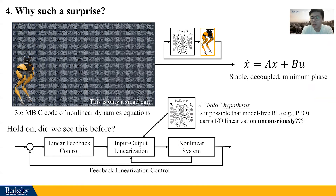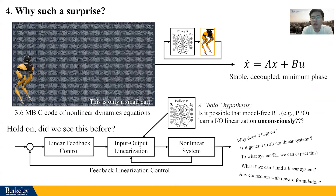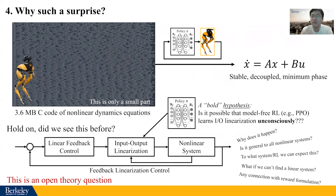So is it possible that model-free RL learns feedback linearization unconsciously? This is very preliminary work in this direction and there are many questions we cannot yet answer, but it is a very interesting and open question we want to bring to the community.